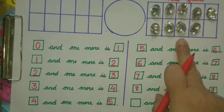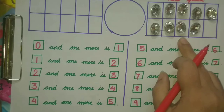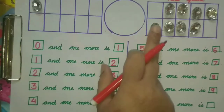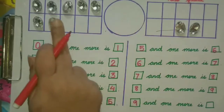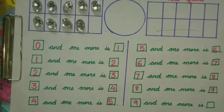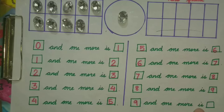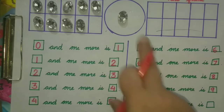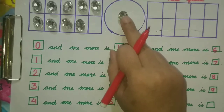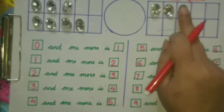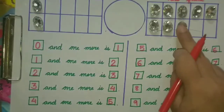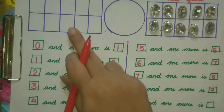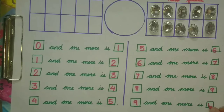Now this 9 will become our next question. We will write 9 here and arrange all these 9 in the first ten frame. 9 and 1 more — yes, it's 10. Let's find out whether our answer is correct. We will arrange all of them and count: 1, 2, 3, 4, 5, 6, 7, 8, 9, 10. So 9 and 1 more is 10.